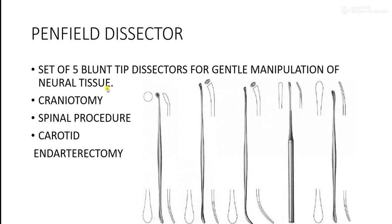These Penfield dissectors are used in craniotomy — the surgery in which holes are created in the cranium to access the brain and underlying tissues — as well as in spinal procedures like laminectomy and carotid endarterectomy, which is the surgery in which plaque is removed from the carotid artery to ensure smooth blood flow to the brain. They come in five types: Penfield dissector number one through number five.